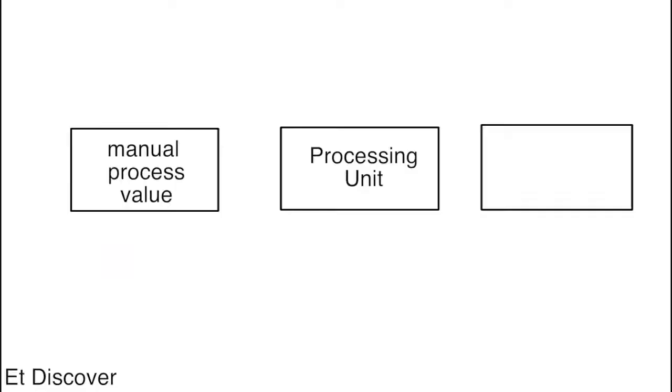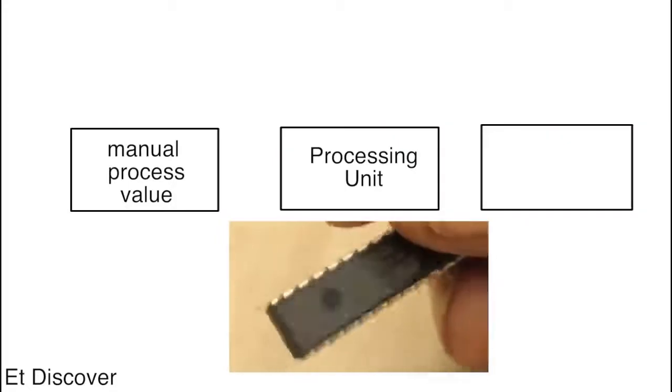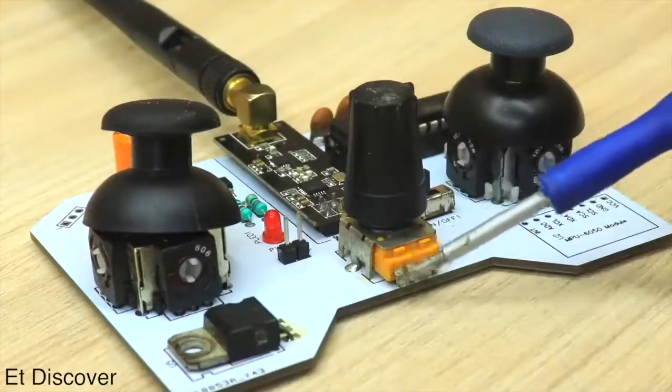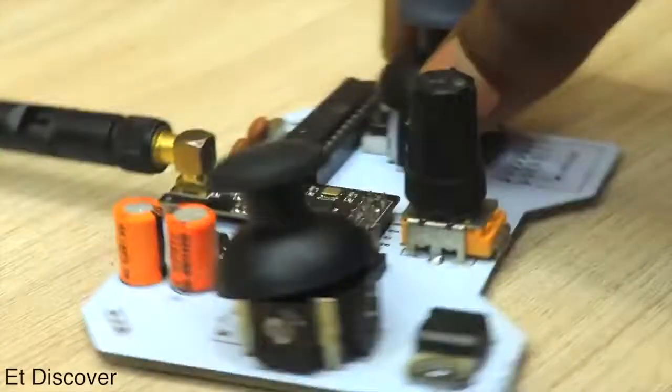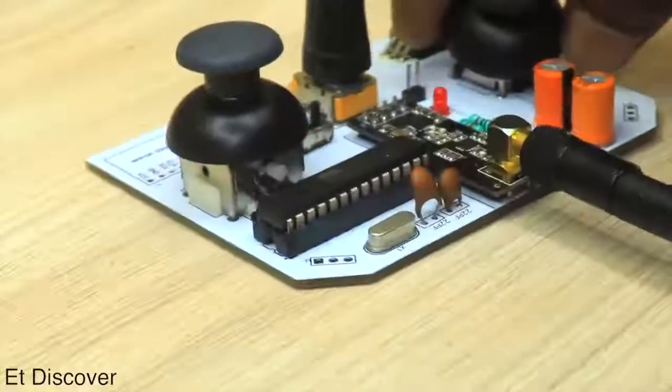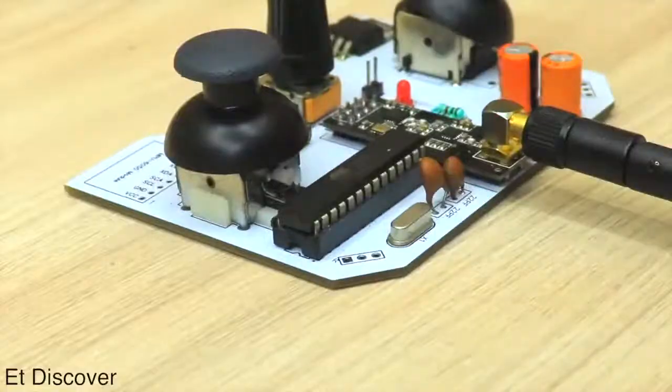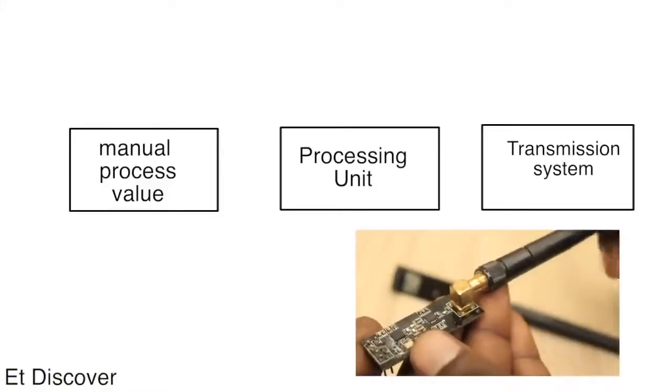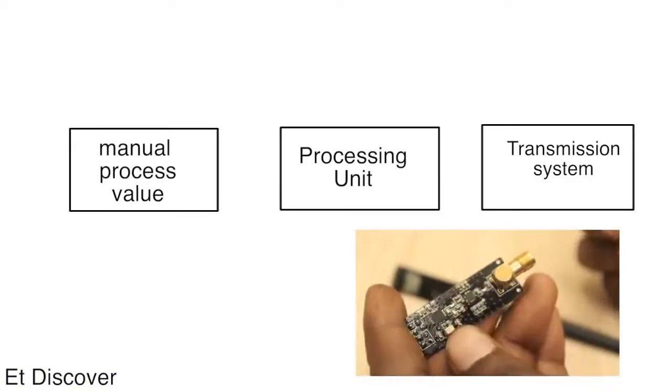Potentiometers make different types of analog values. The second step is the processing unit. In this part, a microcontroller picks different analog values from the potentiometers and prepares to combine those signals for the third step. The third step is the transmission system where the prepared digital signal goes to the transmission section for transmit.